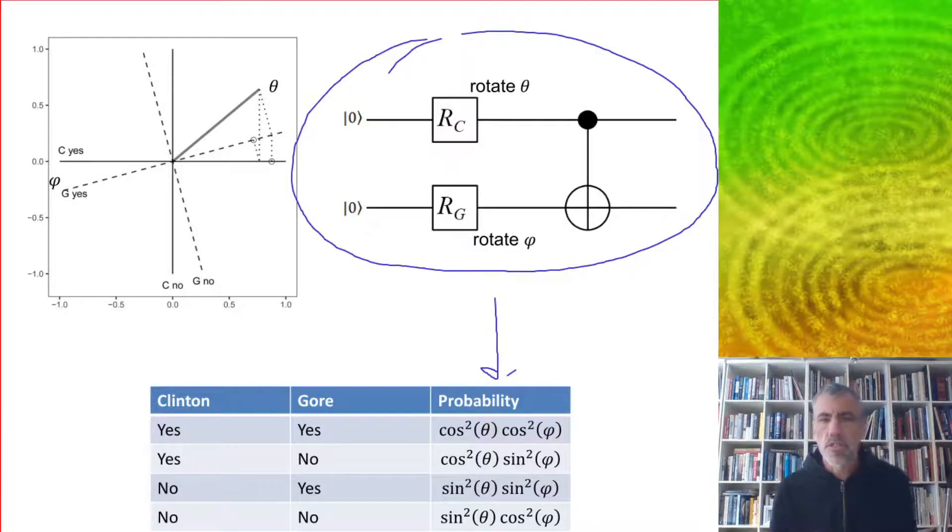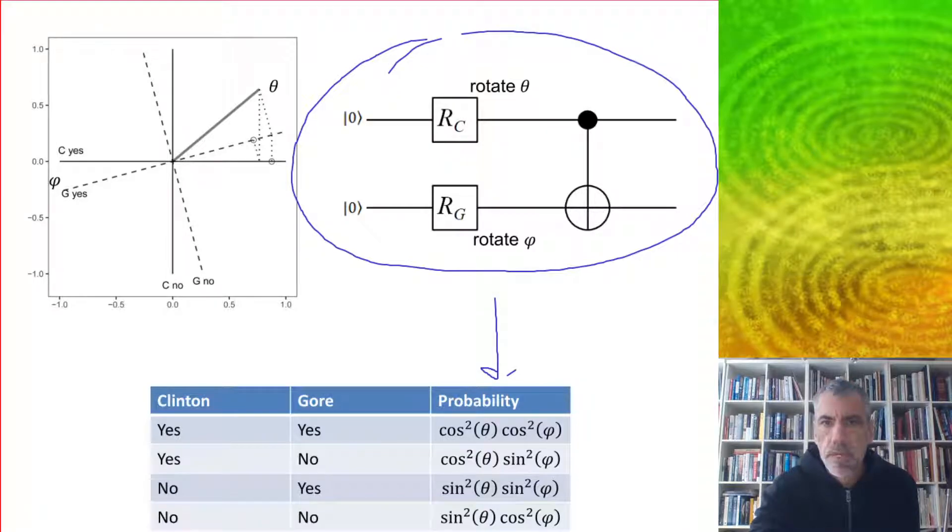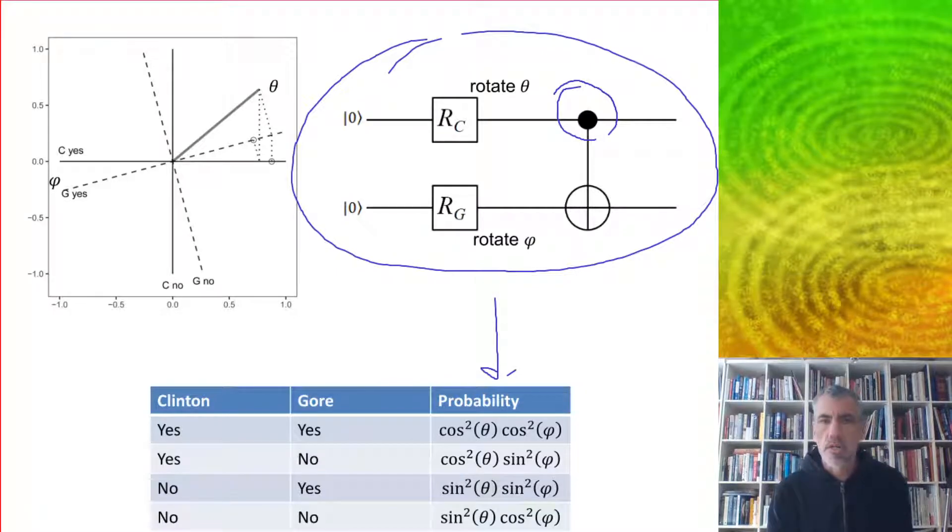It's equivalent to what we get if we use this circuit here. We've got a rotation gate which rotates by theta, preparing our state. We've got a second qubit here rotating by angle phi, which represents this shift in mental frame. The first question is acting as a control on the result of the second question, and that gives exactly the same table of probabilities.